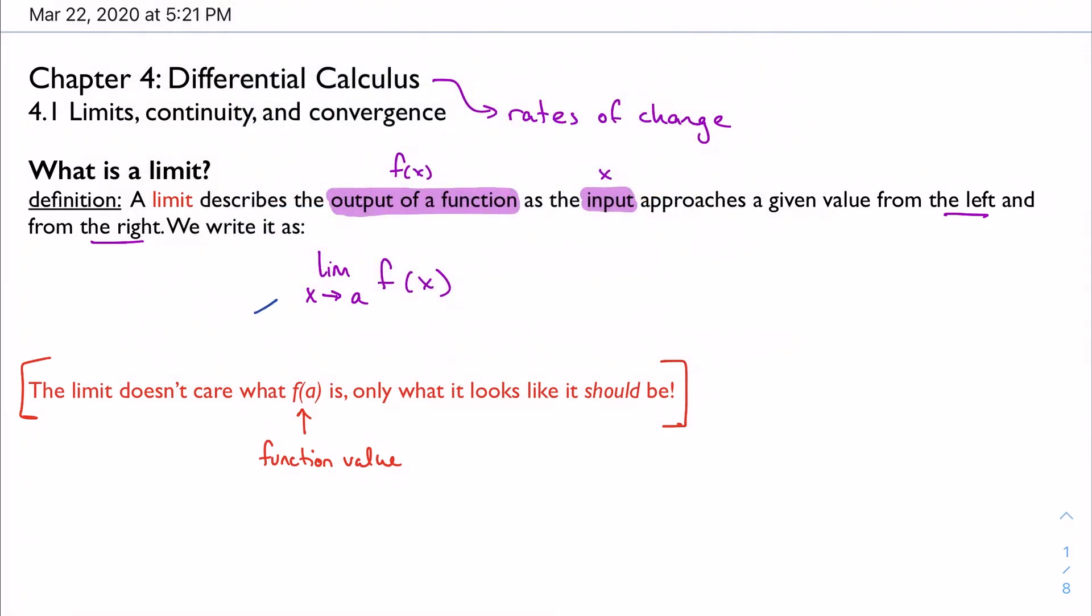Now I want to expand on that notation, because we talked about taking the limit from the left and from the right. If I take the limit as x approaches a from the left, I've got that little superscript minus sign there. This is the limit from the left, starting on the left, moving toward the right.